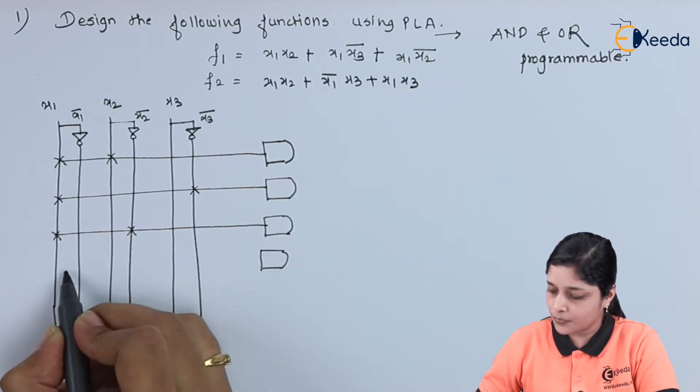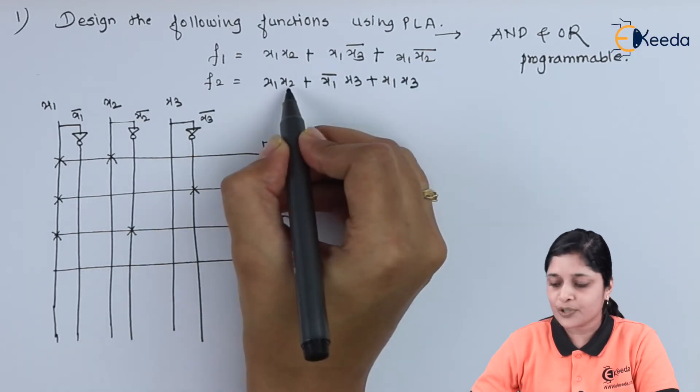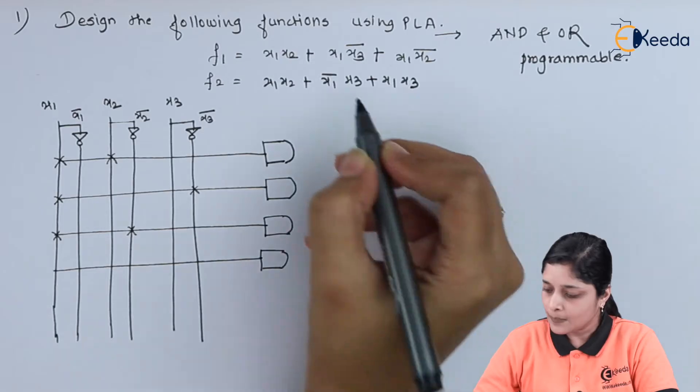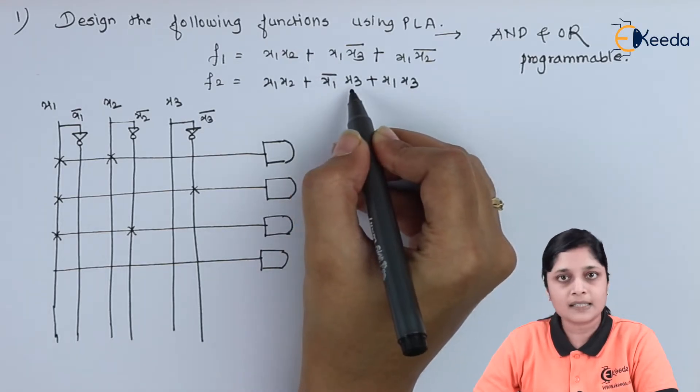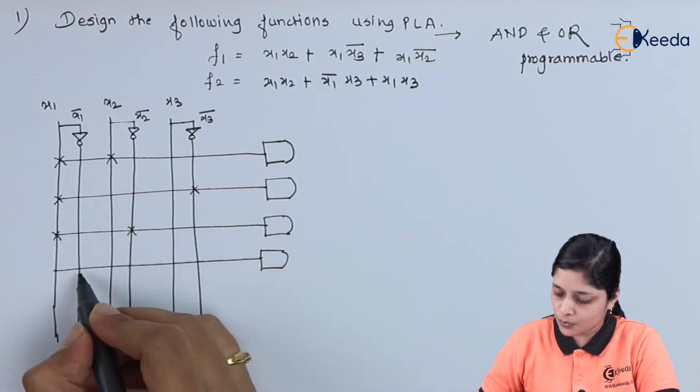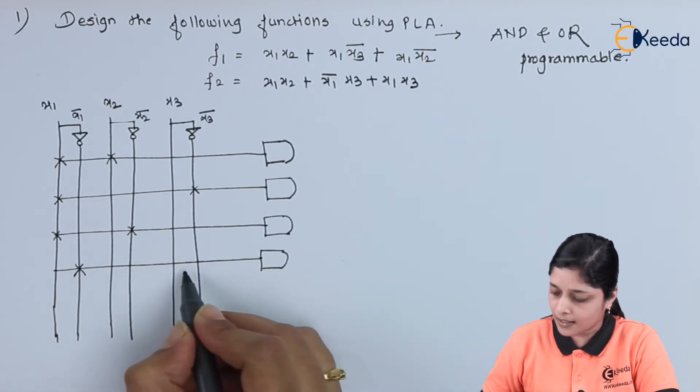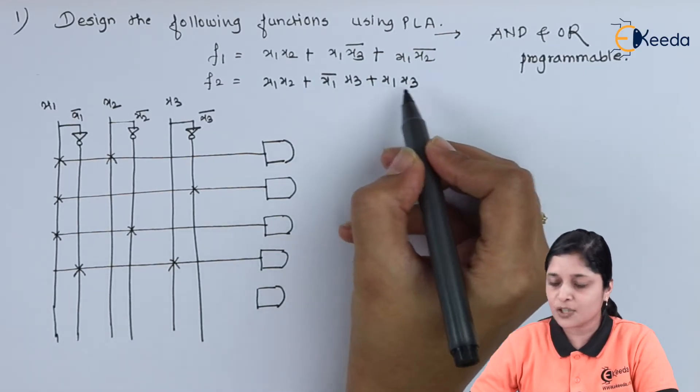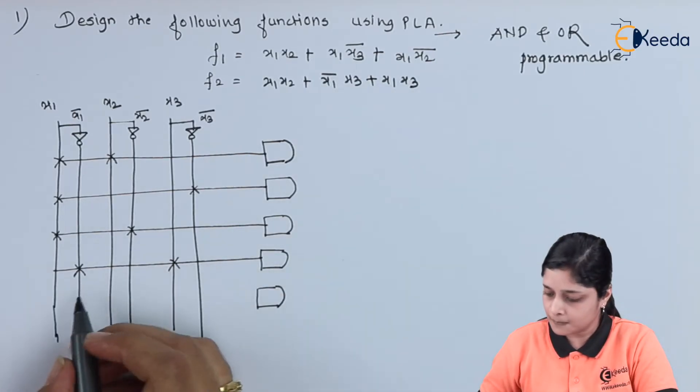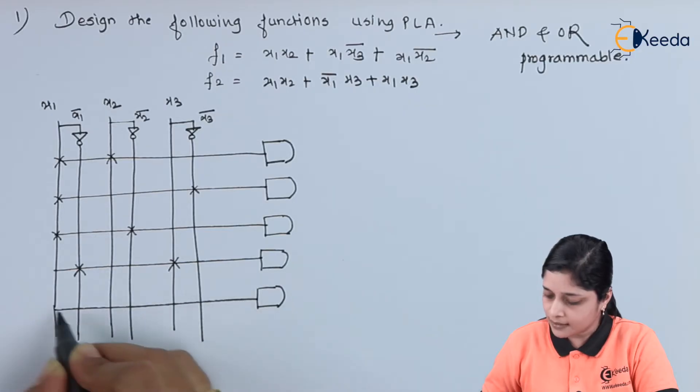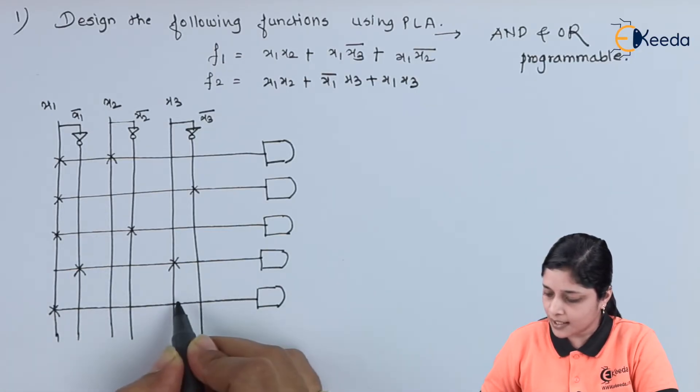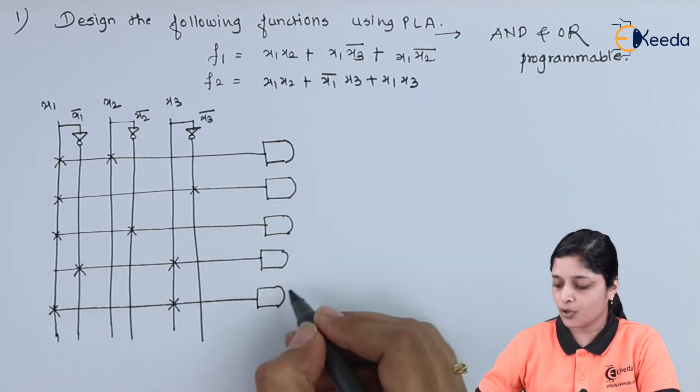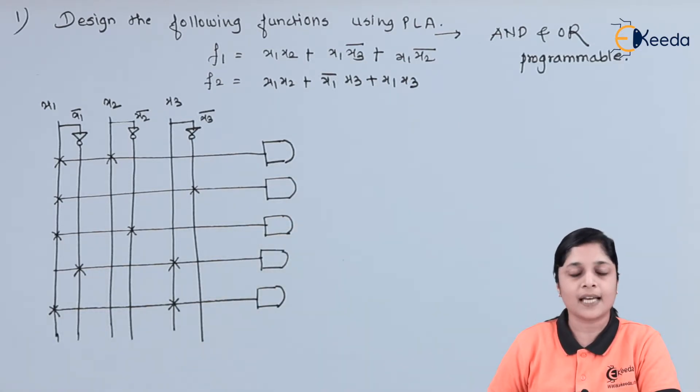After that we have x1 x2. We already have one AND gate available. Then we will concentrate on x1 bar x3, so we are going to search for x1 bar and x3. After that we have x1 x3, so we will draw one line here for x1 and x3. In this way you have to draw the AND gates as per the requirement.